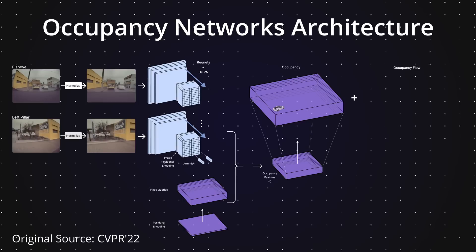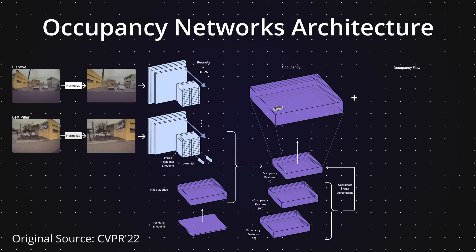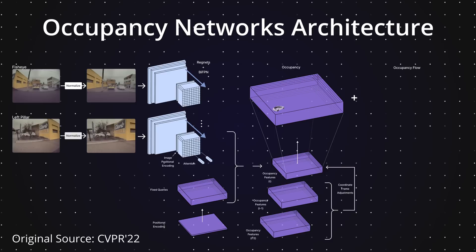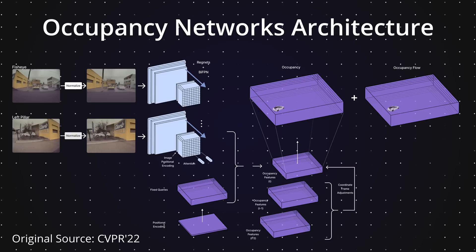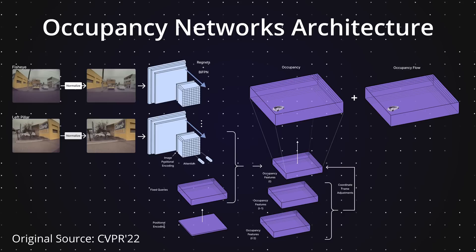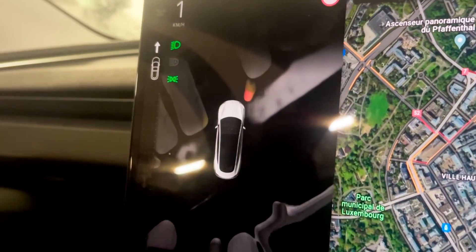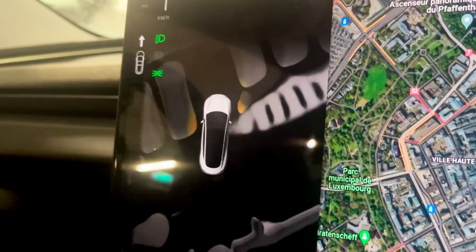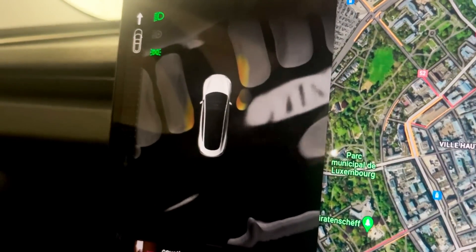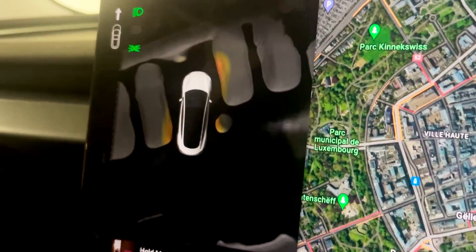In order to generate occupancy flow, Tesla integrates camera data from multiple time steps into a single coordinate frame, then employs the same upsampling techniques to produce the occupancy flow. This approach provides robust protection against all kinds of obstacles, regardless of knowing what it is — it will simply say that this volume of space is occupied and it's moving at a certain rate.